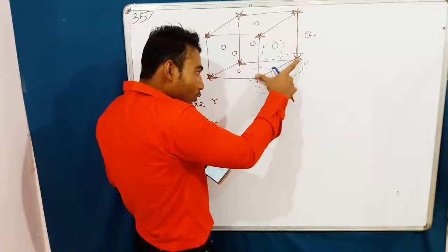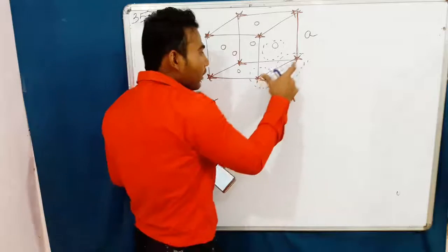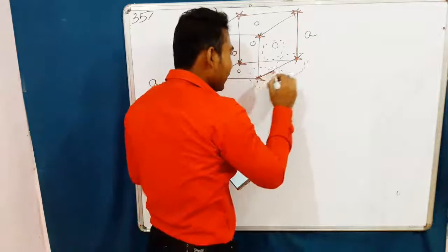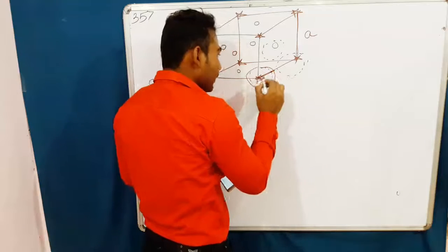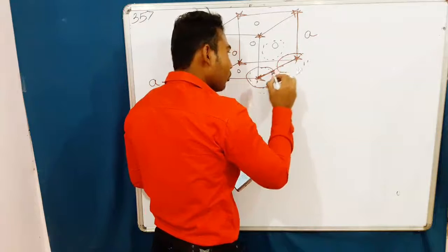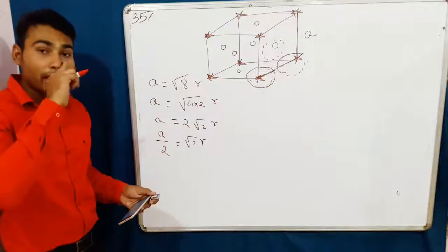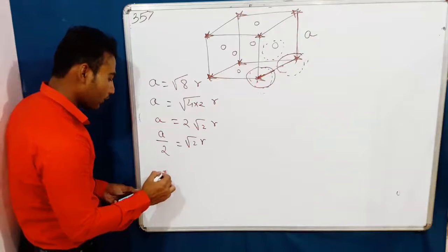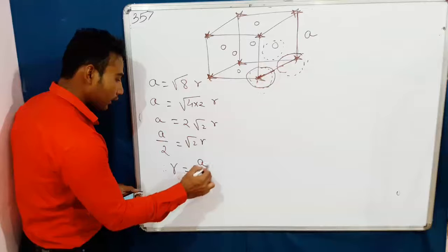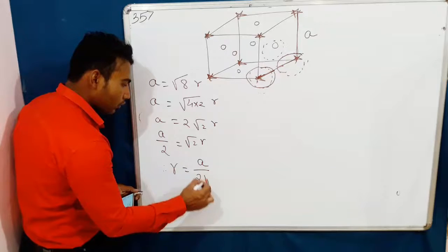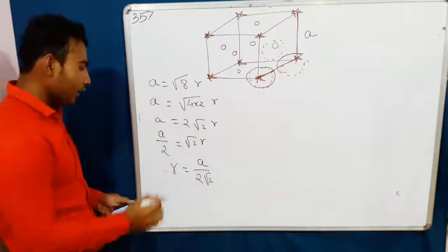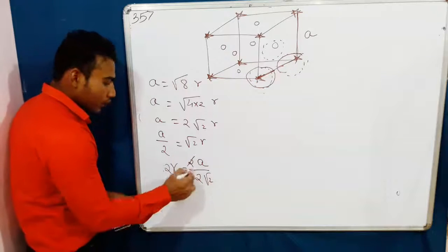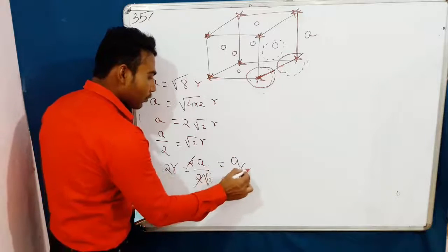The closest distance between two atoms — this is R, this is the radius. The closest approach means we need to double R. So the closest approach equals 2R. Since R equals A divided by 2 root 2, we get 2 into A divided by root 2, and the 2 cancels, giving us A by root 2.